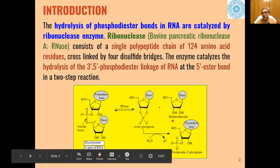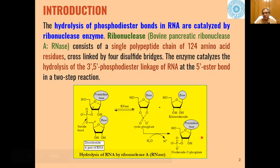One product is ribonucleoside and the other product is nucleoside 3′-phosphate, which has a pyrimidine base at the end of the ribose alcohol.